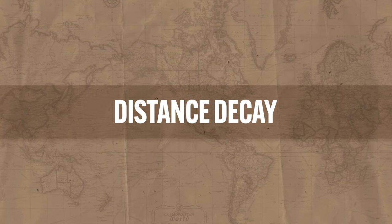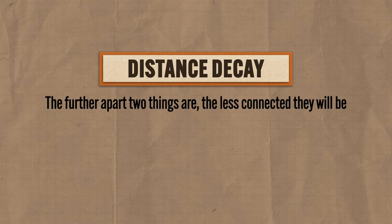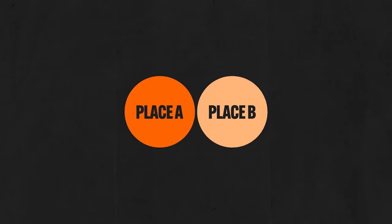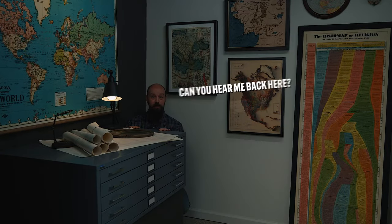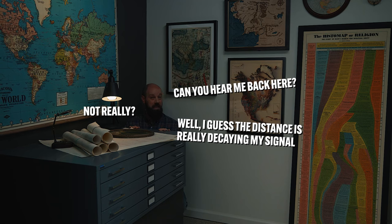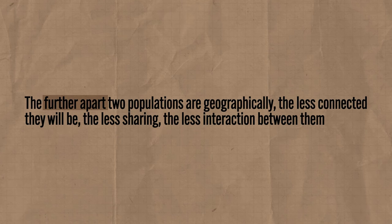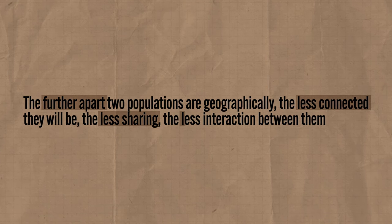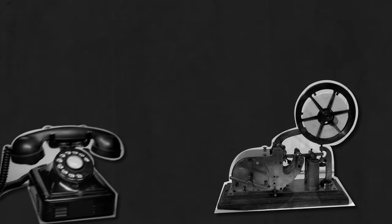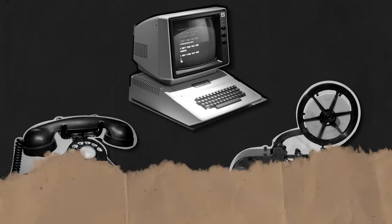The fourth spatial concept is distance decay, which says that the further apart two things are, the less connected they will be. All things being equal, the greater the distance between two places, the more connection between them falls apart. So when I'm really close to the microphone you can hear me fine, a little further back the signal gets weaker. Geographically speaking, the further apart two populations are, the less connected, the less sharing, the less interaction between them. That was the case for much of human history, but with the rapid rise of transportation technologies like railroads, cars, and planes, and communication technologies like the telegraph, telephone, and now the internet, distant places are a lot more connected than they used to be.